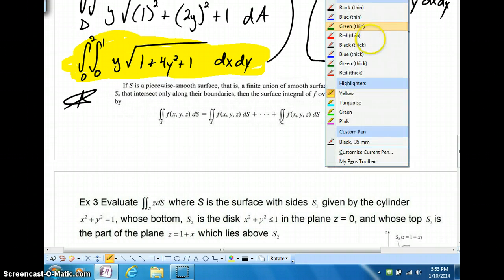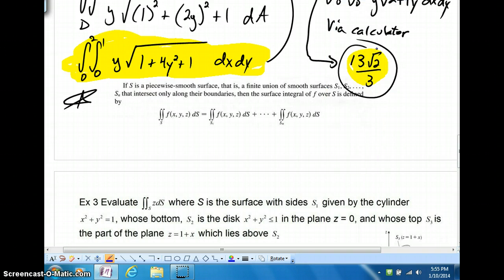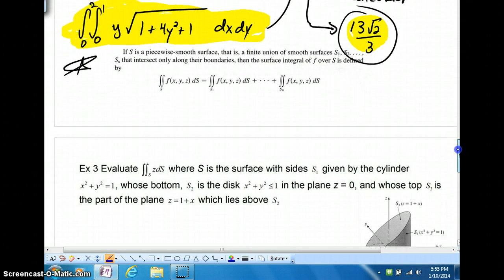But we're going to continue on to one more example. It's a very lengthy one, and it's going to tie into this last part of the notes on this page. Let's say that your surface is a finite union of other smooth surfaces that intersect only along their boundaries. Then what you can do is add up those individual surface areas to get the whole.